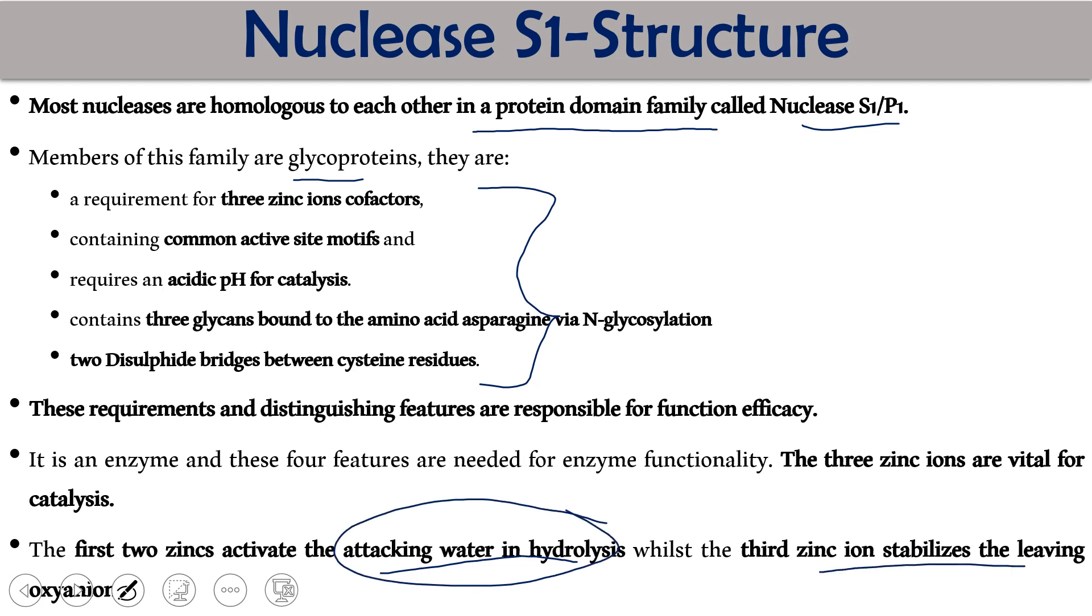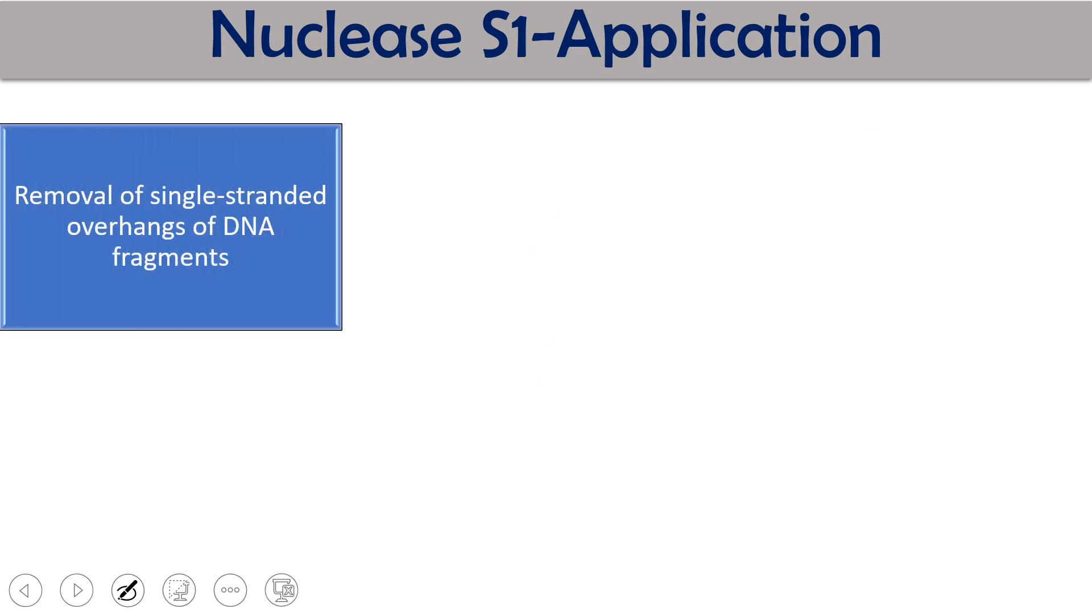What is the application of this nuclease enzyme? Currently we require it in genetic engineering and gene cloning. It is used for the removal of single-stranded overhangs or tails protruding from the DNA fragment to generate a blunt end in the DNA. It removes the single-stranded overhangs of the DNA and produces blunt-ended DNA.